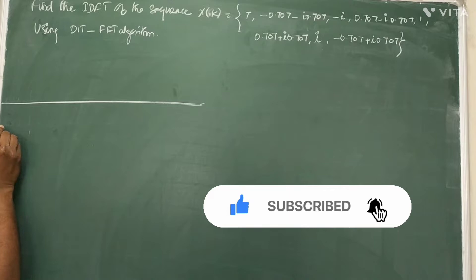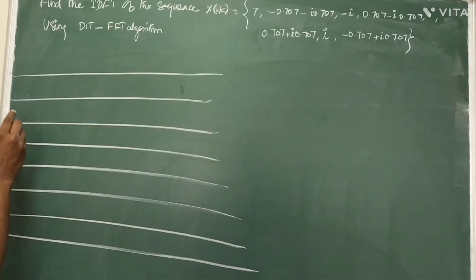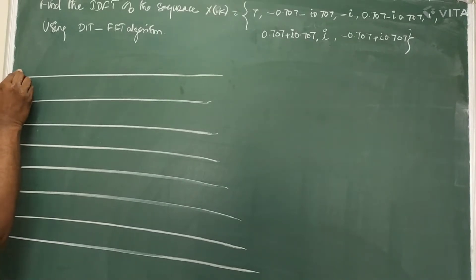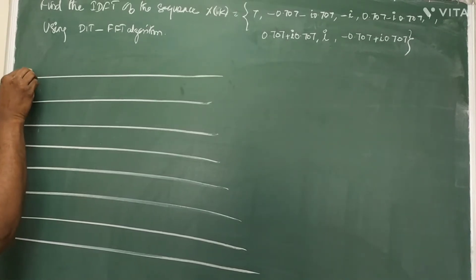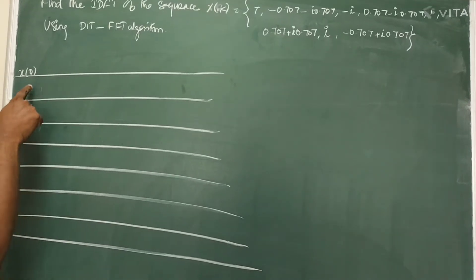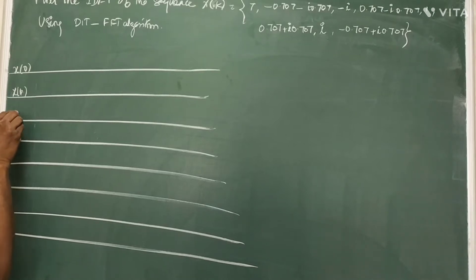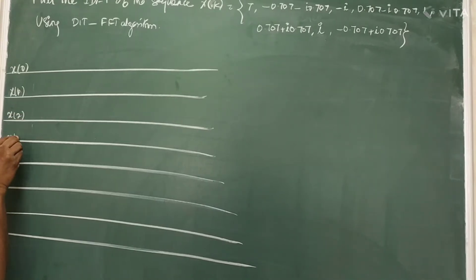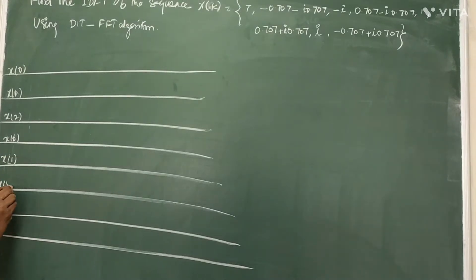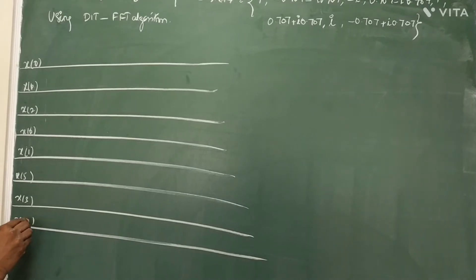First, draw the 8 lines. The first step is to write the sequence in bit-reversal order, which we have seen in the last class. That is the even lines and the odd lines: X(0), X(4), X(2), X(6) and the odd lines X(1), X(5), X(3) and X(7).